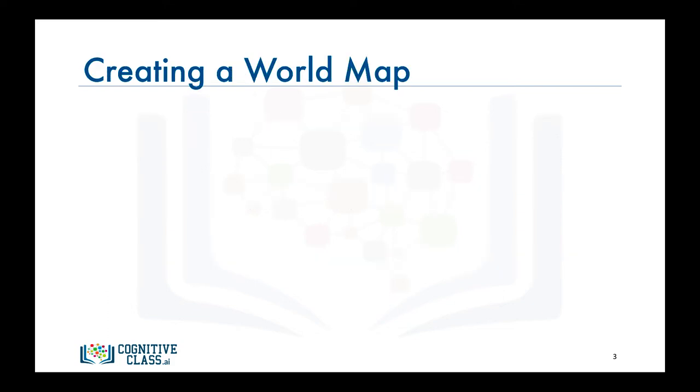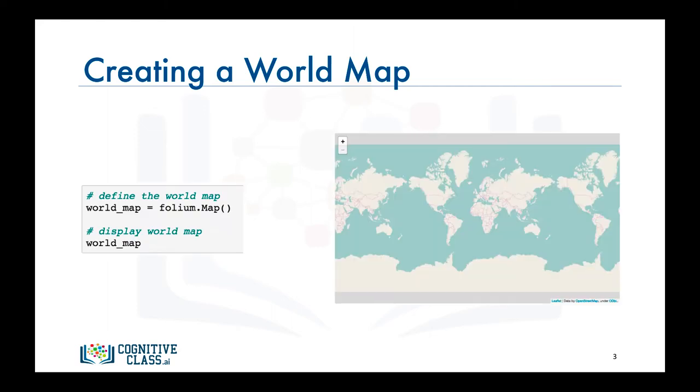Creating a world map with Folium is pretty straightforward. You simply call the map function and that is all. What is really interesting about the maps created by Folium is that they are interactive so you can zoom in and out after the map is rendered, which is a super useful feature. The default map style is the OpenStreetMap which shows a street view of an area when you're zoomed in and shows the borders of the world countries when you're zoomed all the way out.